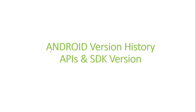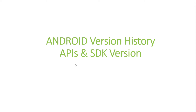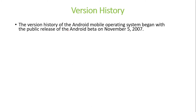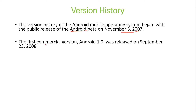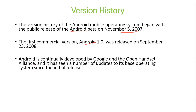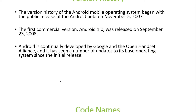The topic we are going to see today is Android version history, APIs, and SDK versions. The version history of the Android mobile operating system began with the public release of the Android beta on November 5th of 2007. The first commercial version, Android 1.0, was released on September 23rd of 2008. Afterwards, Android was continually developed by Google and the Open Handset Alliance, and has seen a number of updates since the initial release.